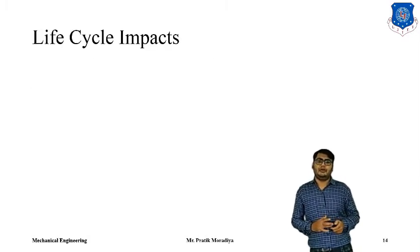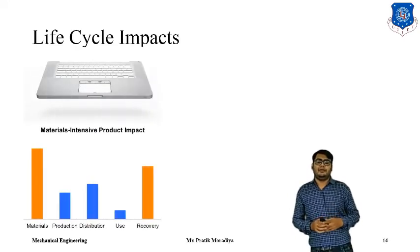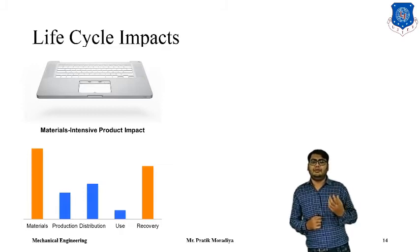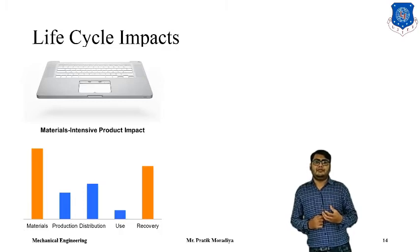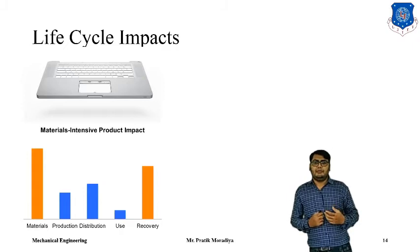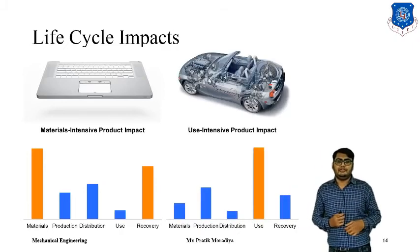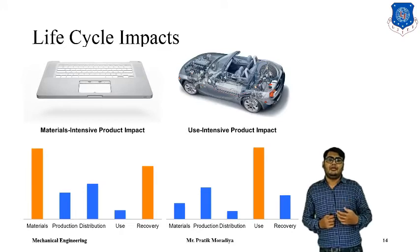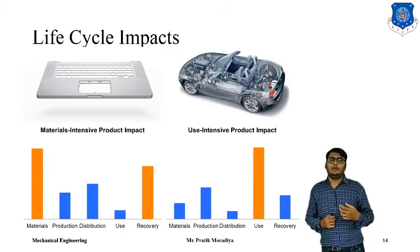Regarding life cycle impacts, there are two types of products. First are material-intensive products, where most of the environmental effect comes from the materials used — for example, a plastic chair or some hardware component where the material greatly affects the environment. Second are use-intensive products, where the material itself does not affect the environment much, but the operation of the product does. For example, a car — the material used in manufacturing a car may not have a significant environmental impact compared to its operation, because the car requires fuel and fuel emits polluting gases.